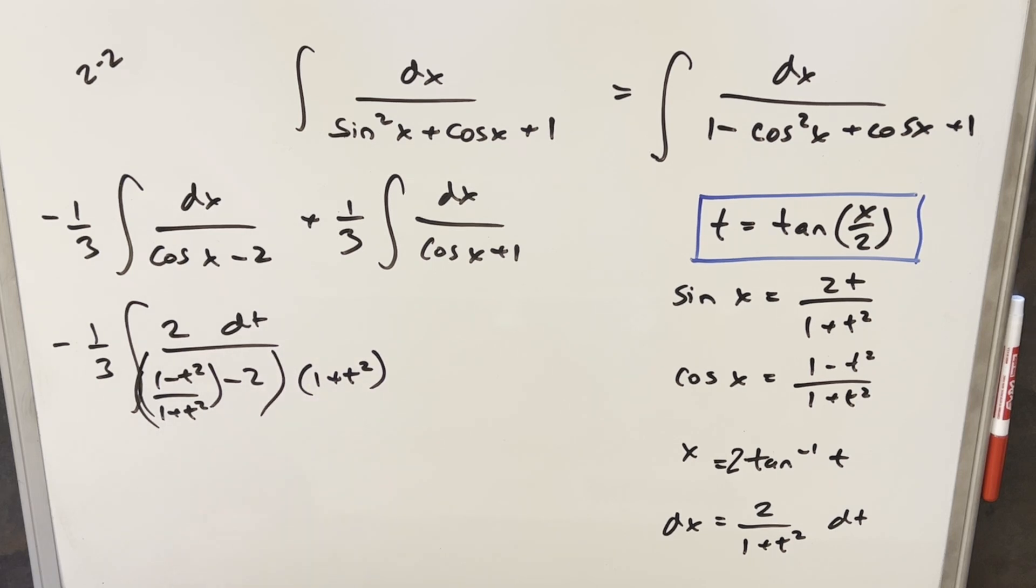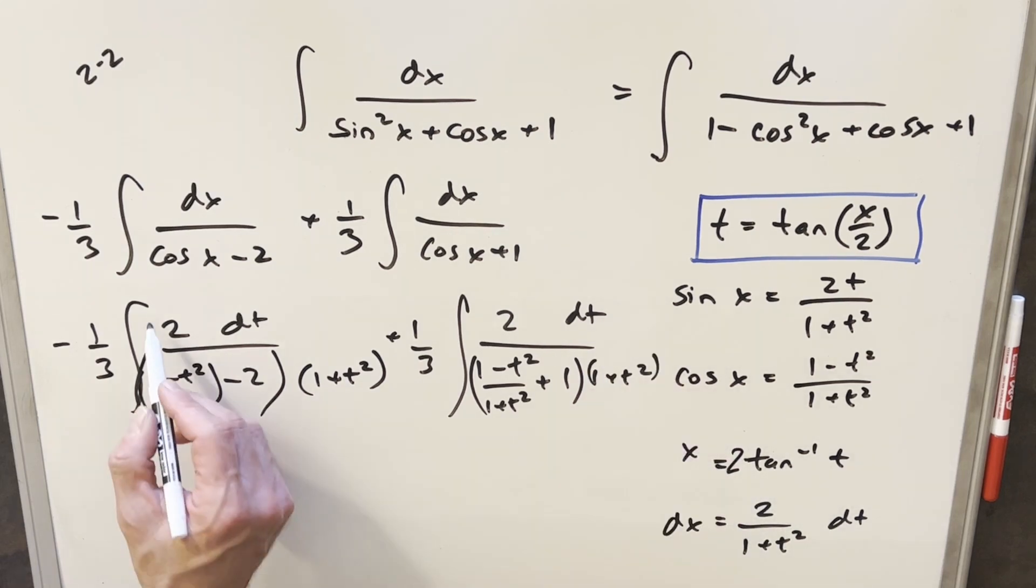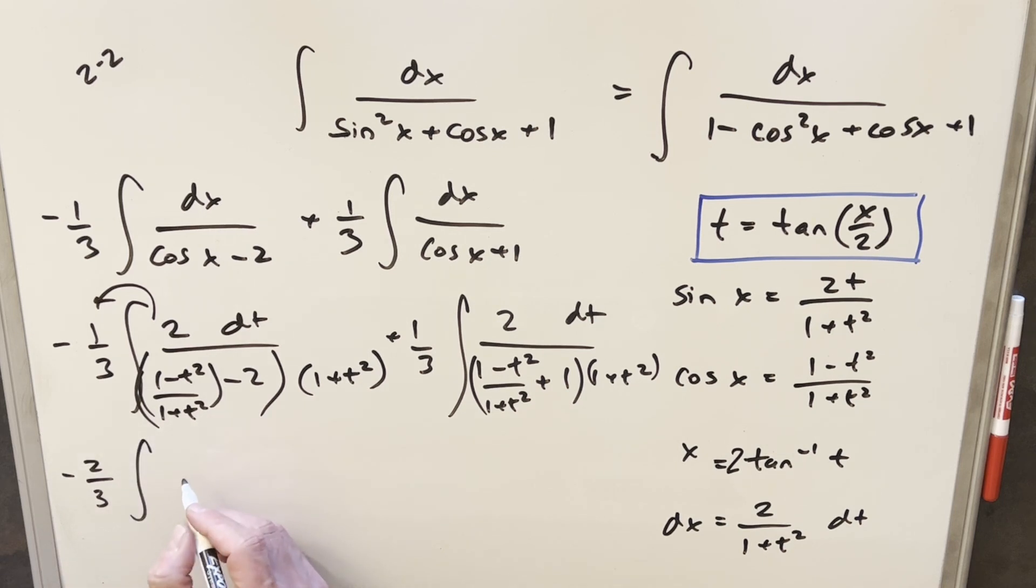Sorry, that's kind of a mess, but I'm just going to keep going. So for dx, we're going to have 2 dt. Same thing with our cosine value over here. Plus 1, and we're going to multiply all this again by this 1 plus t squared. So I'll bring this 2 out front. We're going to end up here with minus 2 thirds, and this is going to become dt. Now the 1 plus t squared is going to cancel with this term. In our denominator, we just end up with 1 minus t squared.